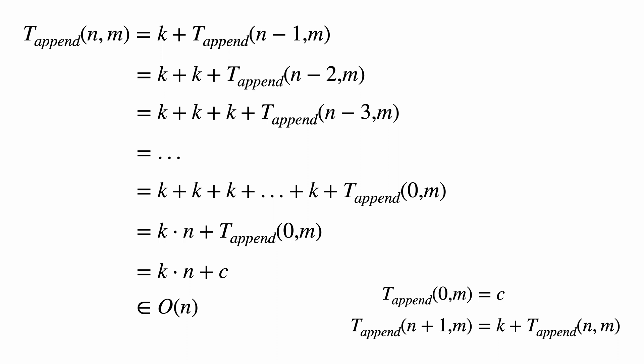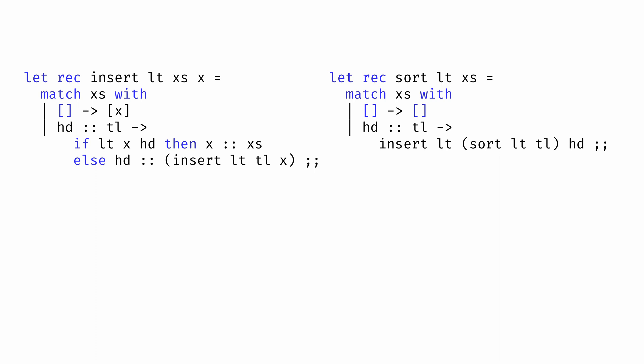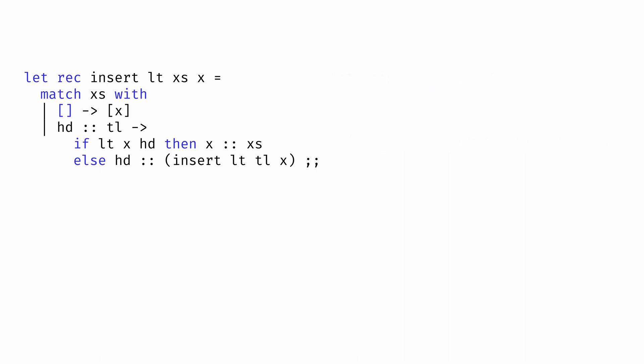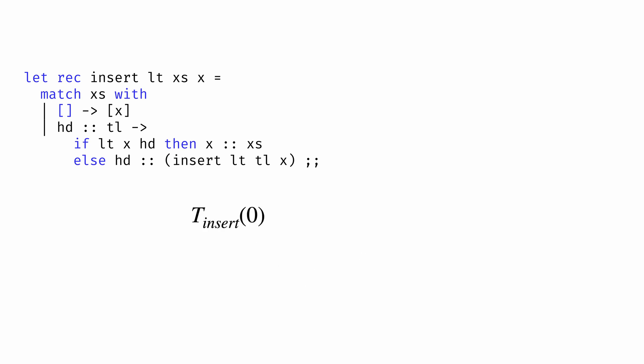Let's apply that technique to analyzing the running times of insertion sort and merge sort. Insertion sort relies on calling the insert function in the body of the sort function, so let's first analyze the time required for the insert operation. We'll define t_insert for the time it takes to insert into a list of length n. When the list is of length 0, it takes some constant c. For inserting into a positive-length list of length n+1, there's a conditional: if x is greater than the head, the time is some constant k₁ plus t_insert(n); otherwise it's just some constant k₂.